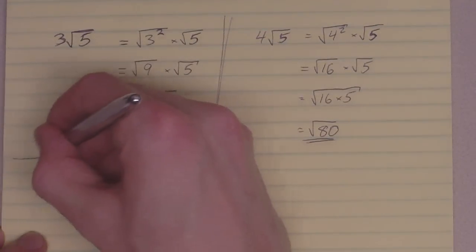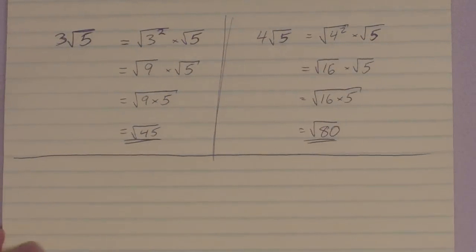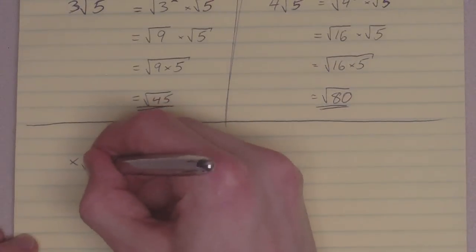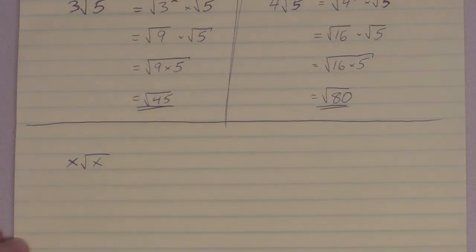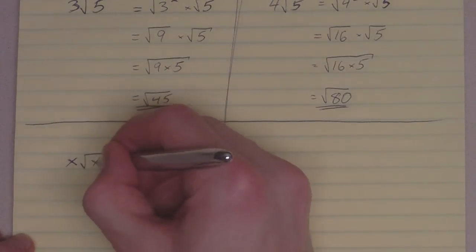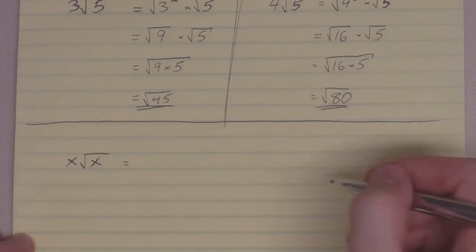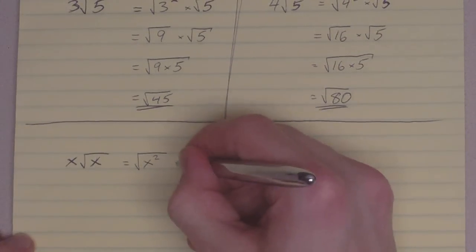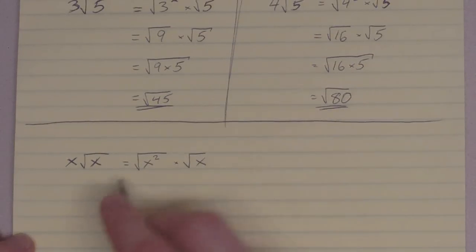Let's try one more. It's just a little bit trickier. Let's not use any numbers this time. Let's do x times the square root of x. Alright, a little bit fancy this time. Now, let's go through the same steps we did before. Take that x that's out front, square it, and take the square root of it. And it's still being multiplied by the root of x from before.